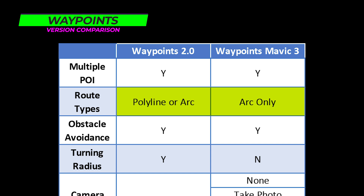On the older version, Polyline would travel in a straight line between waypoints, but we always found it a bit abrupt. With the Arc setting — now your only choice — the drone smooths out the corners as it travels from waypoint to waypoint. There was also a weird side effect on the old version when set to Arc: it prevented you from using some of the other settings. Well, all of that is gone now.